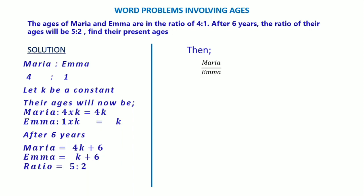Their ages is 4k plus 6 divided by k plus 6. This should be equal to the current ratio, which is 5 to 2. So I will equate it to 5 out of 2.